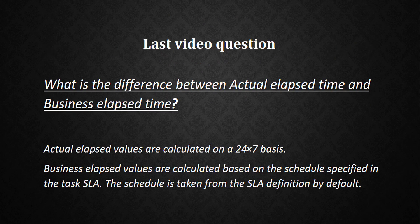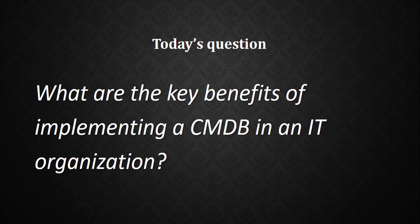In the last video I asked about the difference between actual elapsed time and business elapsed time. Actual elapsed values are calculated on a 24/7 basis, while business elapsed values are calculated based on the schedule specified in the task SLA. The schedule is taken from the SLA definition by default.